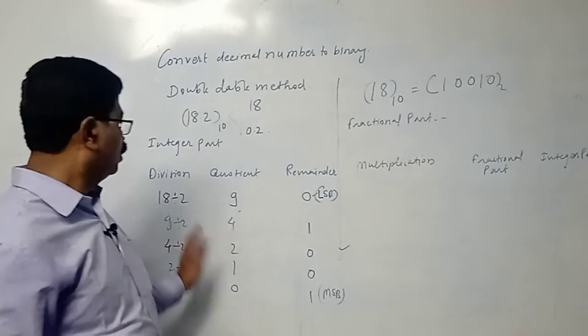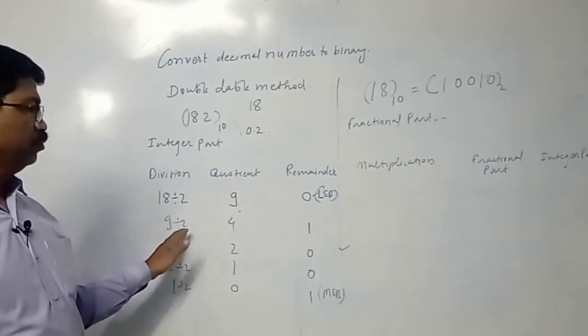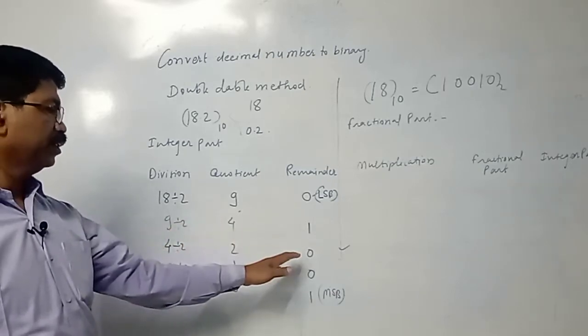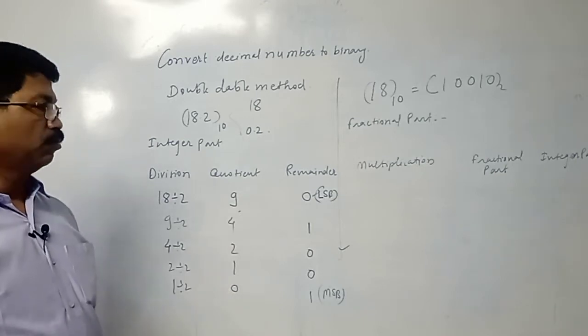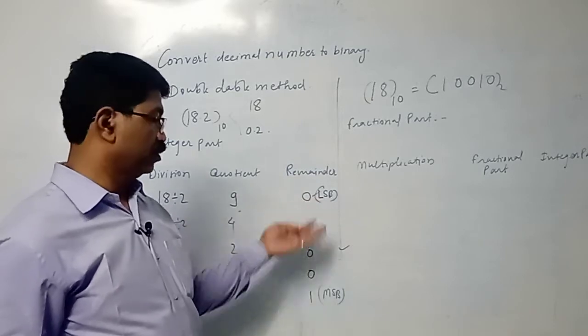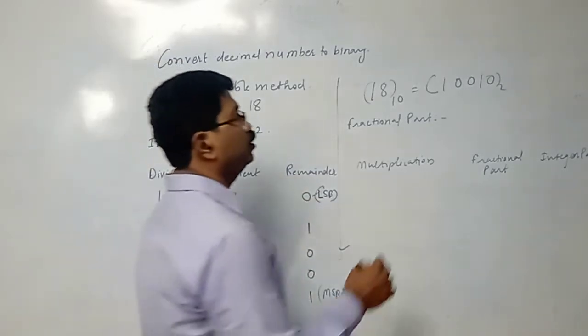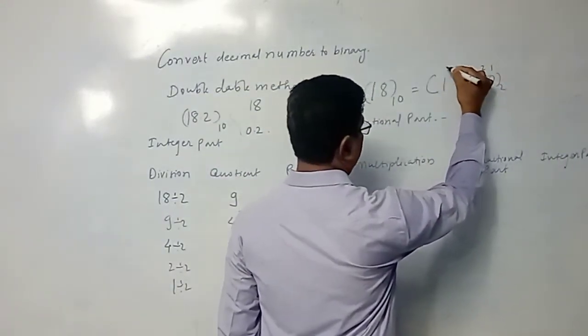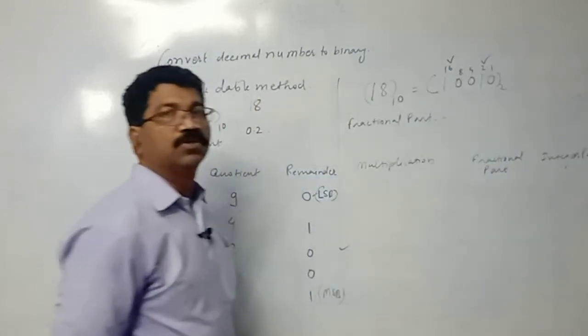So this way you have to divide the given number by 2, obtain quotient and remainder, again divide quotient by 2, obtain quotient and remainder. Go on continuing this process till the quotient becomes 0, and now you have to collect the remainder from MSB to LSB, last to first. It becomes 10010. You can verify also. Write the place value 1, 2, 4, 8, and 16. So it is 16 plus 2, that is 18. So it is correct.